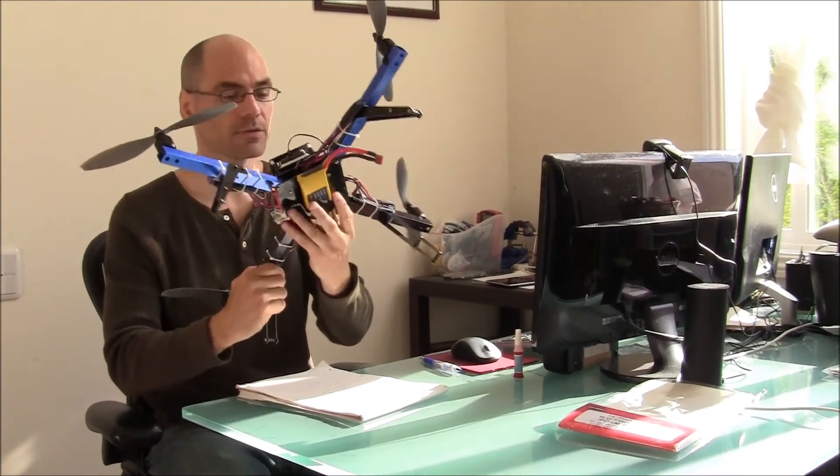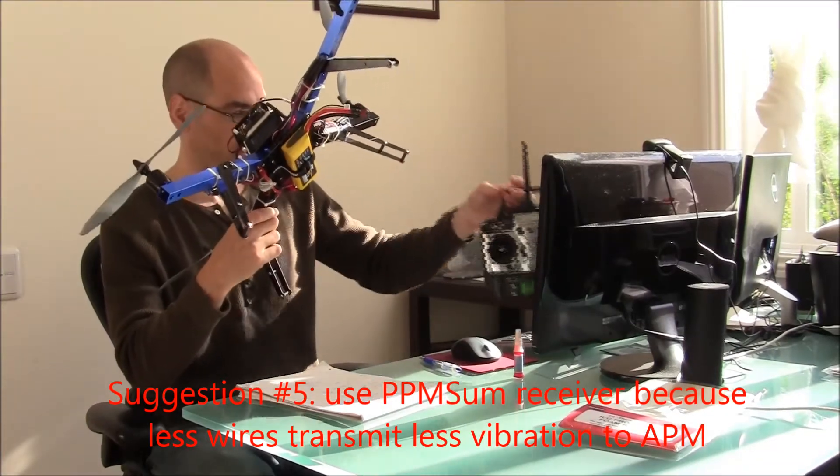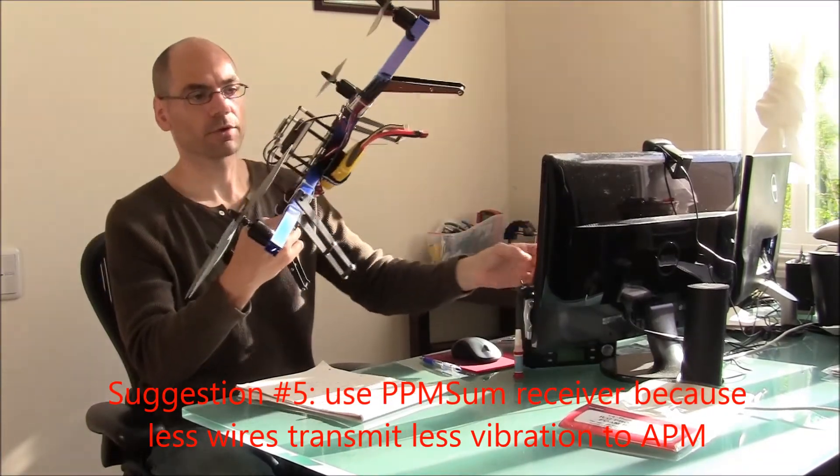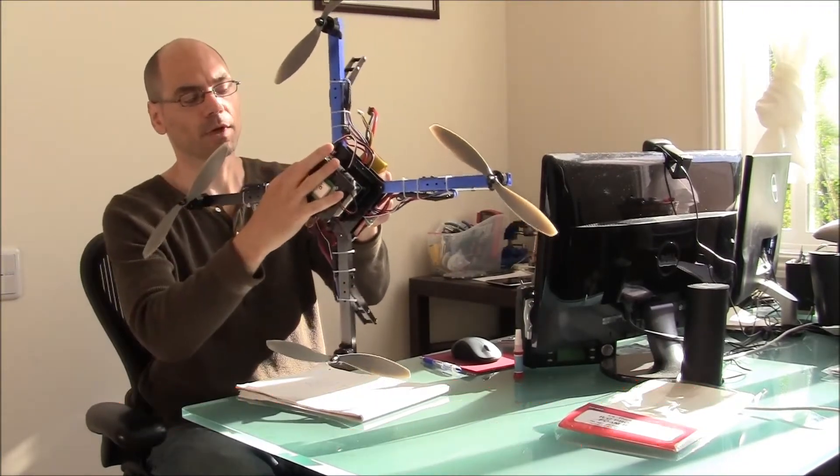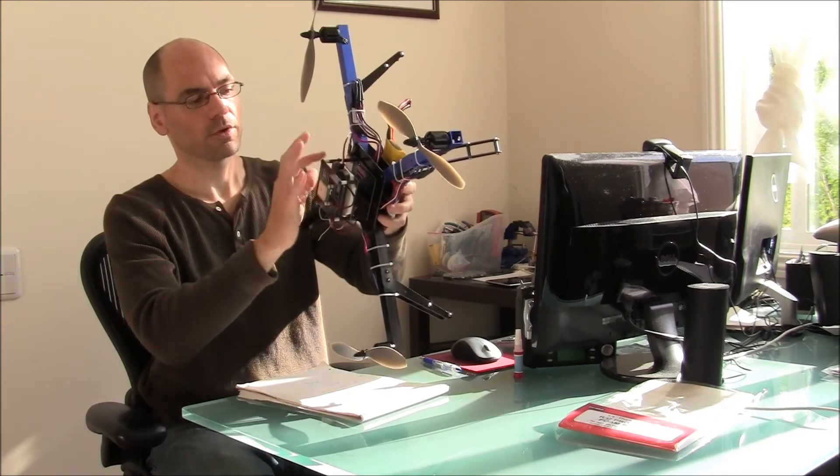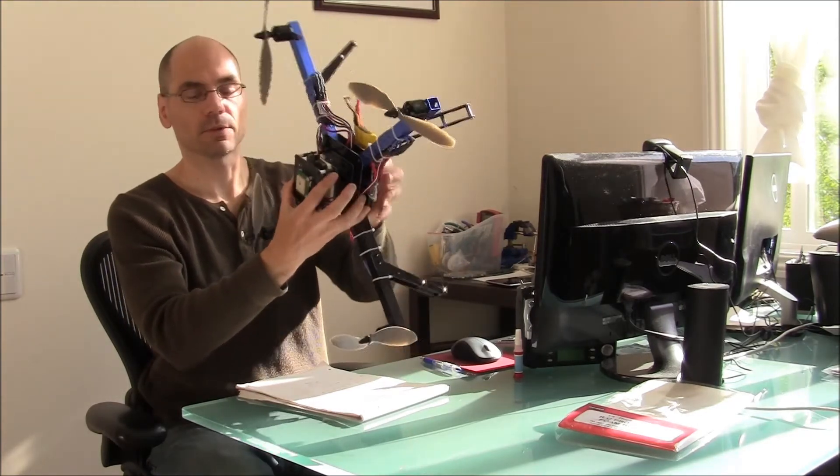The last thing is I use a Futaba 7-channel, but I don't use the Futaba receiver. I use the FR Sky FASST-compatible receiver. And again, the nice thing about this is it's only a single wire instead of many wires, so it cuts down a little bit on vibration.